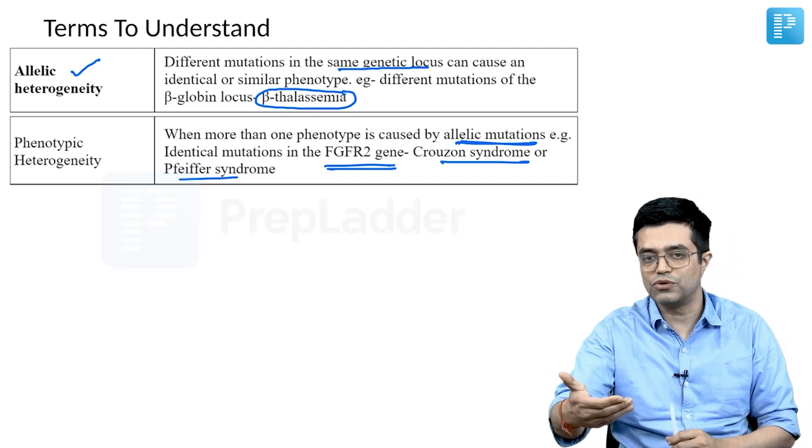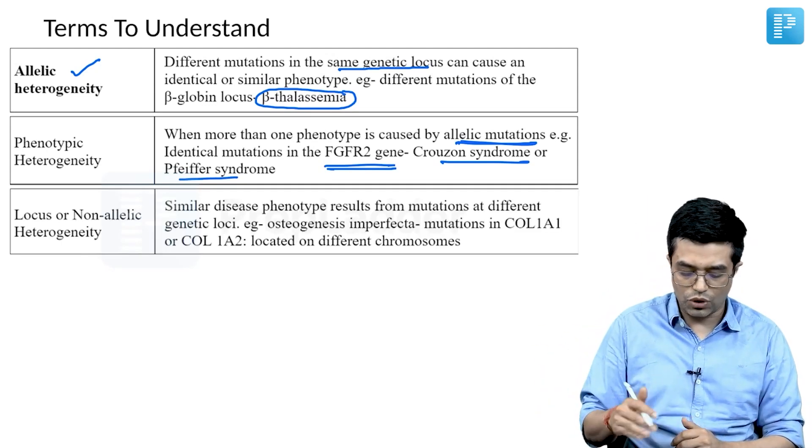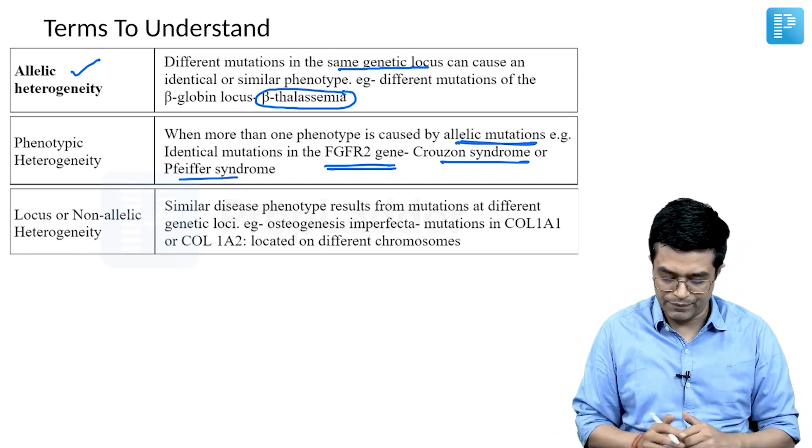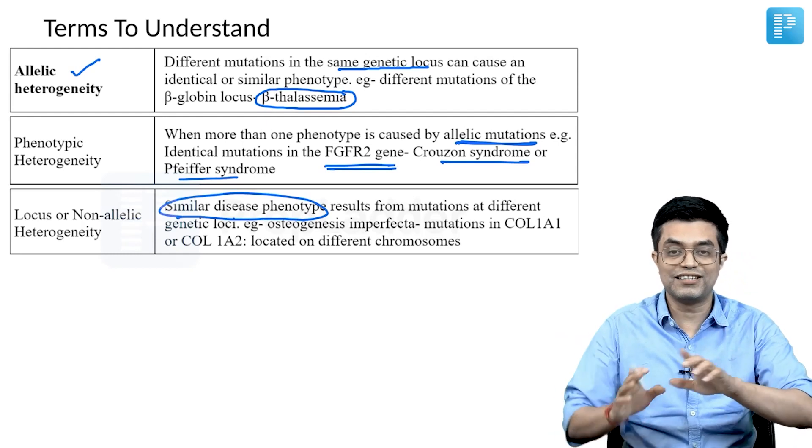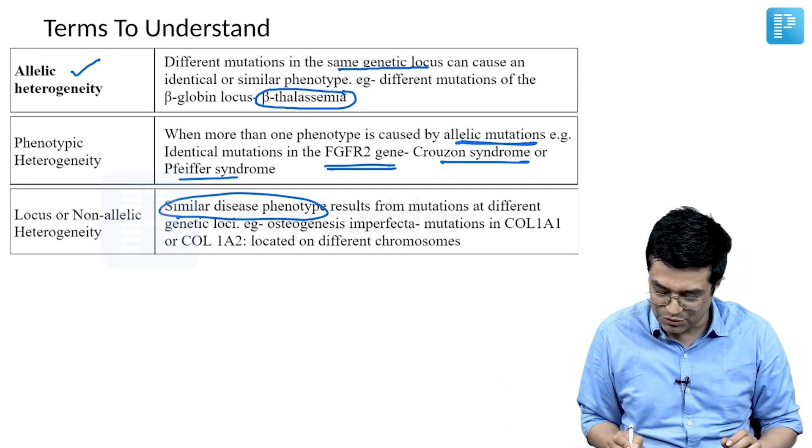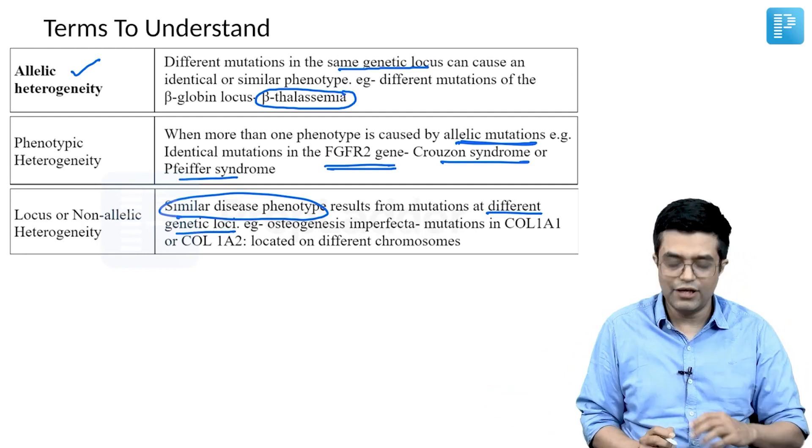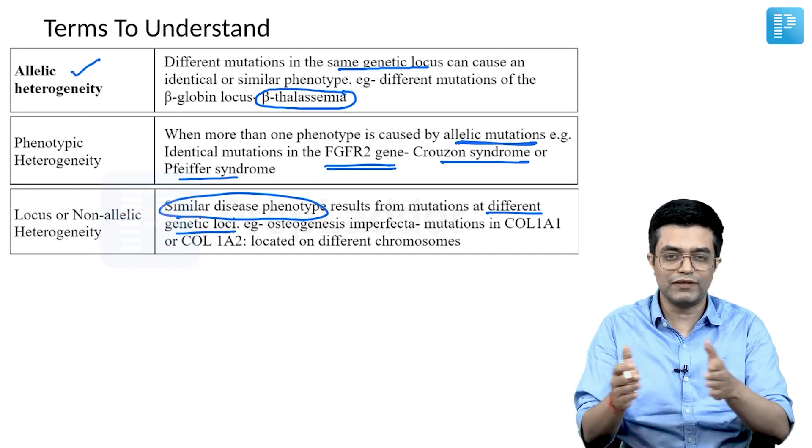The third is locus or non-allelic heterogeneity. When similar disease phenotype - now the phenotype is alike but the genes are different - when similar phenotype results from mutations at different genetic loci. For example, osteogenesis imperfecta: there are separate genes getting involved but both produce a common phenotype. That is locus or non-allelic heterogeneity.